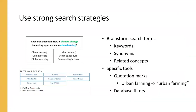So the first tip is using strong search strategies. I wanted to talk about two in particular. The first is brainstorming. Before you begin searching for information, brainstorm several keywords, synonyms, and related ideas that you can use when you're searching. There are usually many ways to put the concepts we're researching into words, and because searching is experimental, you will very likely end up doing multiple searches. So take a few minutes before you begin to brainstorm and write down words you might use for each concept in your research question.